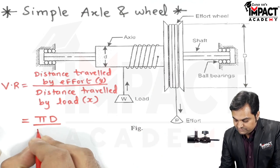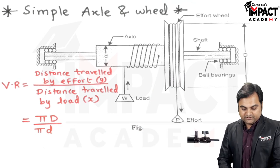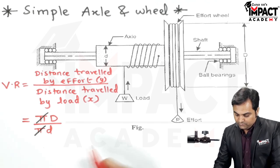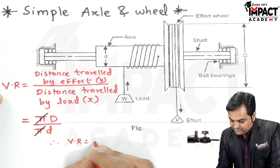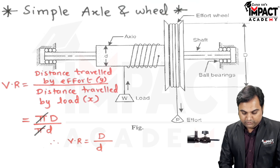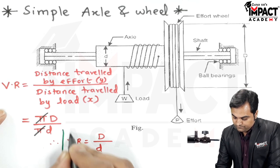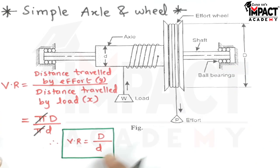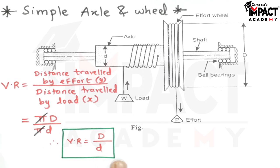So its circumference is pi into small d. The distance covered by the load wheel, pi and pi gets cancelled. So finally the velocity ratio formula for a simple axle and wheel is capital D upon small d, where capital D is the effort wheel diameter and small d is the load axle diameter.